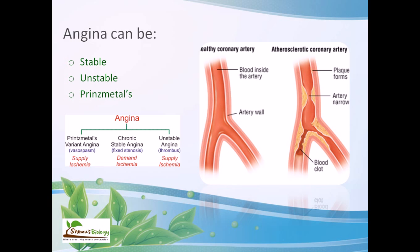Prinzmetal angina occurs without provocation, usually at rest, due to coronary artery spasm. This is a type of problem requiring serious concern — it is not unpredictable in the general sense, but it indicates underlying problems with blood vessel elasticity. You need to consult with a doctor quickly to check what is going on.